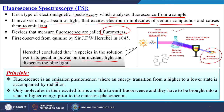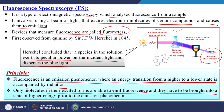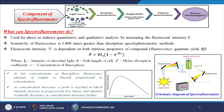Principle: fluorescence is an emission phenomenon where energy transmission from a higher to a lower state is accompanied by radiation. Only molecules in their excited forms are able to emit fluorescence and they have to be brought into a state of higher energy prior to the emission. Components of a spectrofluorometer: light source — generally a 75 to 450 watt high pressure xenon arc lamp or lasers. Then an excitation monochromator, then a sample holder either made of quartz, optical glass, or plastic cells. Then an emission monochromator and lastly a detector or photomultiplier.